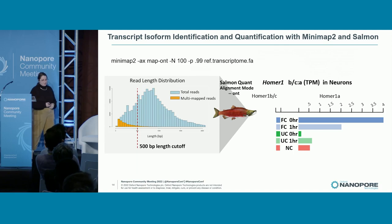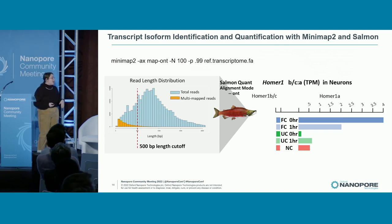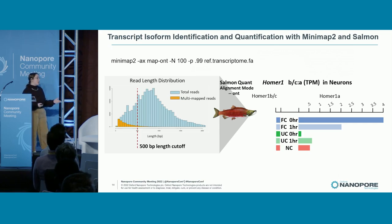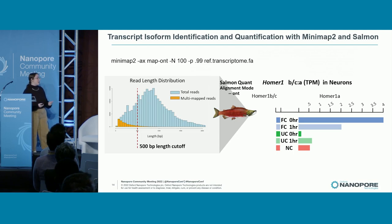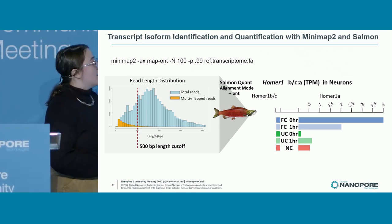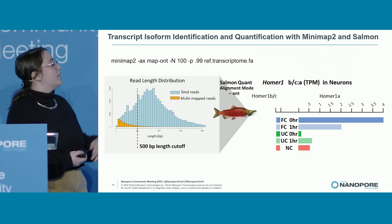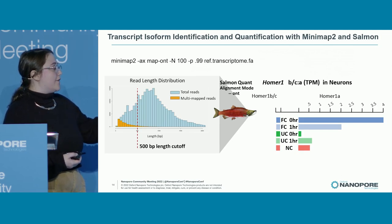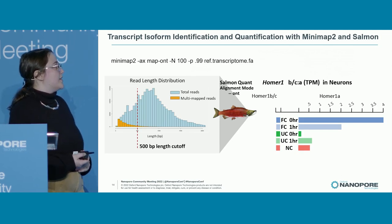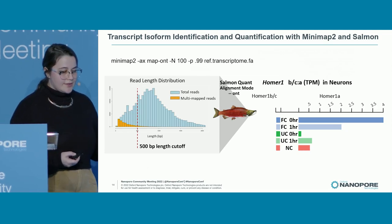This is some older data with only one animal per group. But when we identify our isoforms and quantify them with Salmon, we see genes with predictable transcript isoform expression patterns based on the literature. Homer1 is the poster child for activity-induced alternative splicing, and Homer1A is an isoform that's rapidly and transiently induced upon activity. We can see that pattern at an eagle-eye view, serving as a sanity check for our isoform quantification.